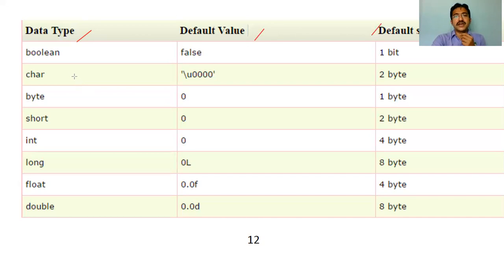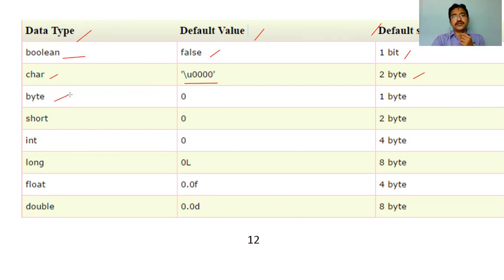Starting with boolean — the default value is false and the size is one bit. The second data type is char — the default value is '\u0000' in single quotes, and the size is two bytes, whereas in C it is one byte. The third data type is byte — default value is zero and size is one byte. Short — default value is zero and size is two bytes. Integer — default value is zero and size is four bytes, whereas in C the size of integer is two bytes.